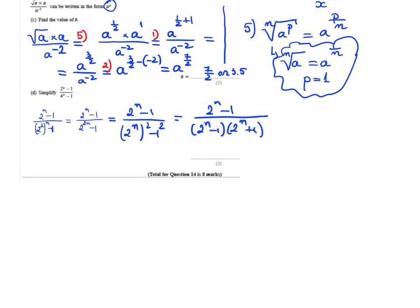Now I can cancel 2^n - 1 because it's a factor on the denominator. So I'm left with 1/(2^n + 1). I factorized using the fact that a² - b² equals (a - b)(a + b).